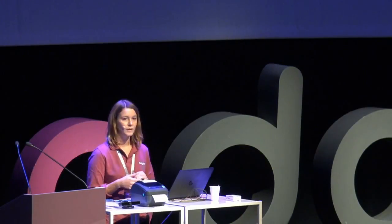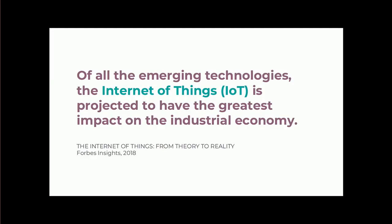Of all the emerging technologies, IoT is projected to have the biggest impact on the industrial economy, according to a recent Forbes study. What is IoT? It refers to the fact of connecting smart objects to the internet. Today, we have heating systems that we control through our smartphones. We also have smart fridges that are connected to the internet. There are many examples of IoT in our everyday lives, and today we will focus on the impact of IoT on the business life.